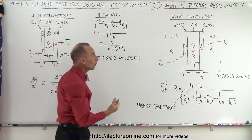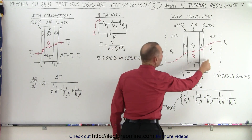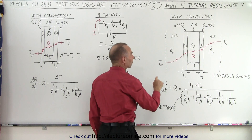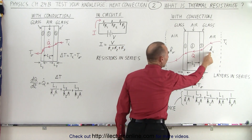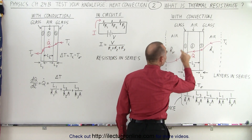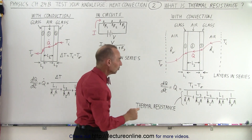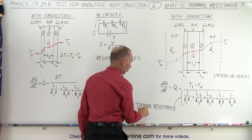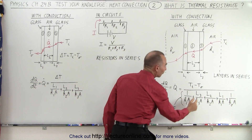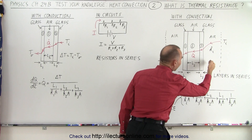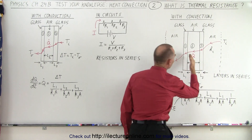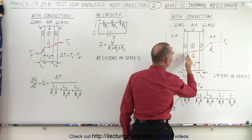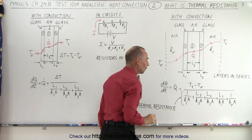We also need to take into account the resistance to heat flow due to convection on either side of the window. These depend upon the transfer coefficients on the inside and the outside relative to the glass. Notice that this simply adds two more resistance terms — thermal resistance due to convection on the inside and on the outside — while still keeping the other three terms associated with the two layers of glass and the layer of air in between.